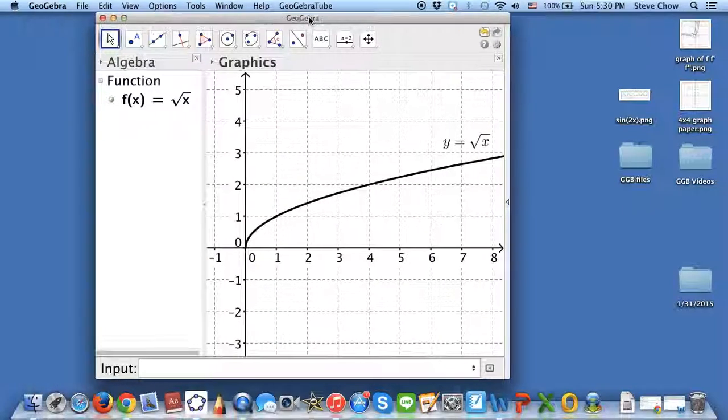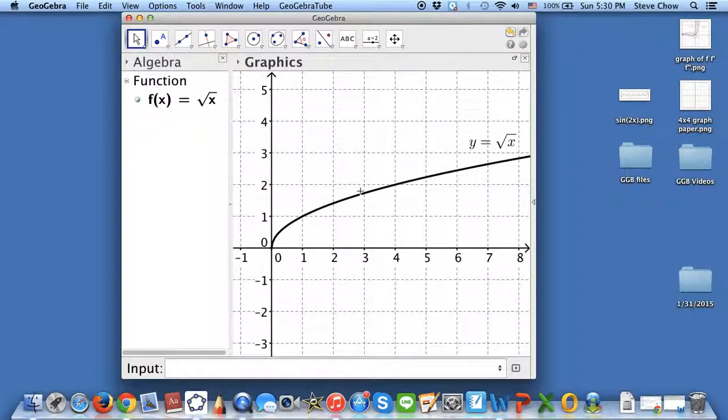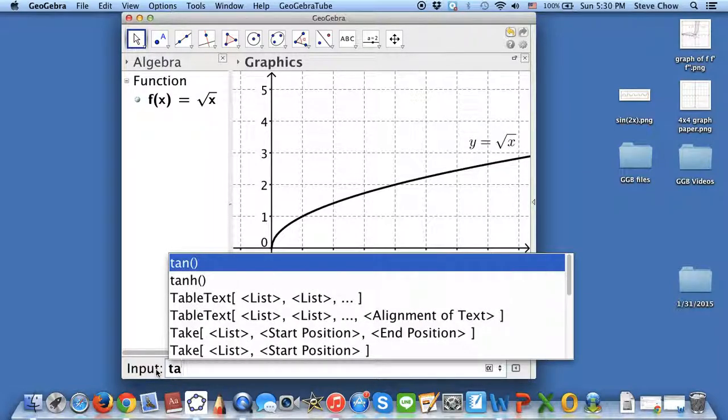And I want to graph tangent line. So let's say I want to find the equation of the tangent line when x is equal to 4. So just think about what you want to do. Tangent line, right? So you go to the input. And then you just start typing it. Tangent. So you see, if you just press TA.